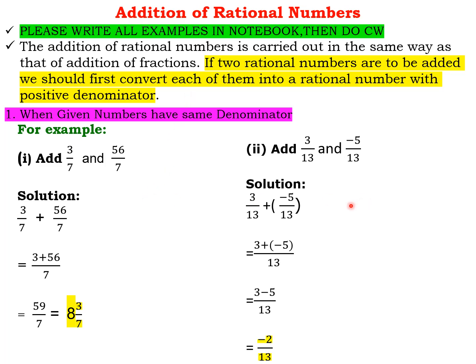Let us take some examples. First one is add 3/7 and 56/7. This is an example when the denominators are the same. Since both the denominators are the same, we will only add the numerators. So 3 plus 56 by 7 equals 59 by 7, which in mixed form is 8 whole 3/7.